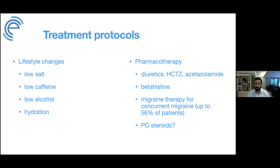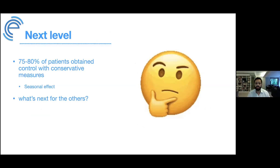Steroids are also helpful. Oral steroids have been shown to be useful given the inflammatory and autoimmune component of Meniere's disease, and are worth considering during flare-ups. Following all of these steps, about 75–80% of patients achieve good control of their disease, often becoming symptom-free or nearly symptom-free for months or even years.